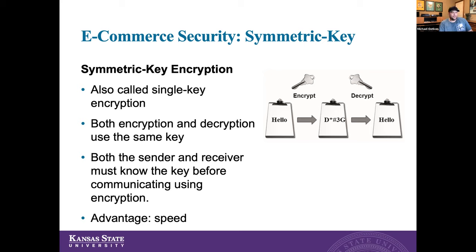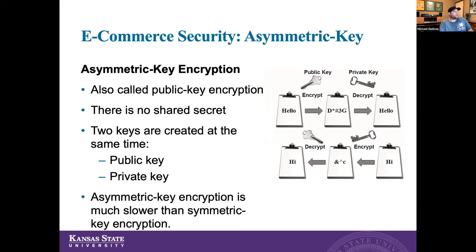The advantage of symmetric key encryption is it's fast because it's only using that one key. Asymmetric key encryption, also called public key encryption, uses two different keys - a public key on one side and a private key on the other. The data gets encrypted using the public key, then they use a private key to decrypt it. If returning information back, they encrypt it with a private key and it gets decrypted using the public key. This process is a little bit slower but a lot more secure.